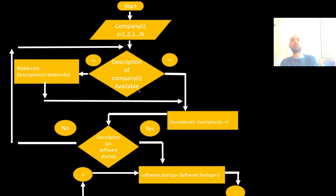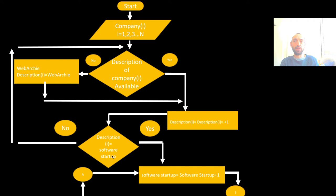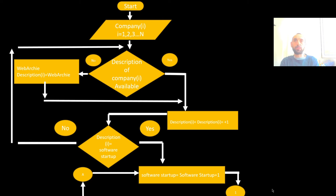If it is not a software startup, we go back to search for another description and determine whether it belongs to a software startup or not. Once we finish this stage, we have the software startups derived from the descriptions. We then move to the next stage, where we process this counter further.